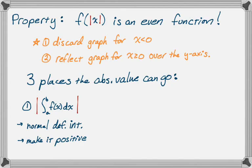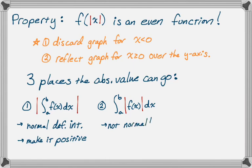The next place it can go is a little weirder, but still not hard to deal with. It's the integral from a to b of the absolute value of f of x dx. This is definitely not normal — you don't just take the definite integral ignoring the absolute value sign. Instead, you look at all your signed areas: anywhere the area was negative, those are going to have to become positive. What the absolute value of f of x does is reflect all the negative parts of the graph — the parts below the x-axis — over the x-axis, so they become positive regions.